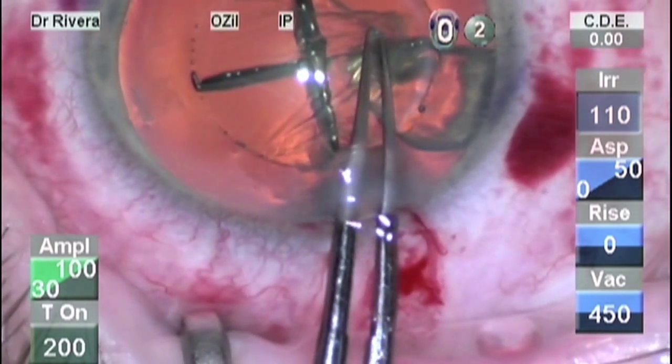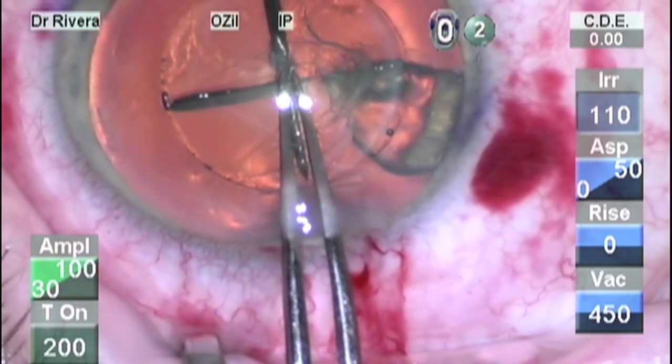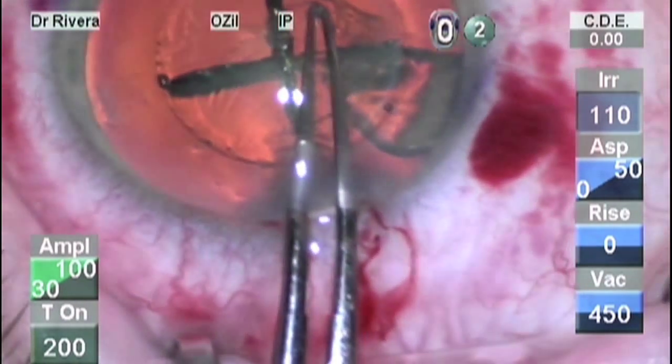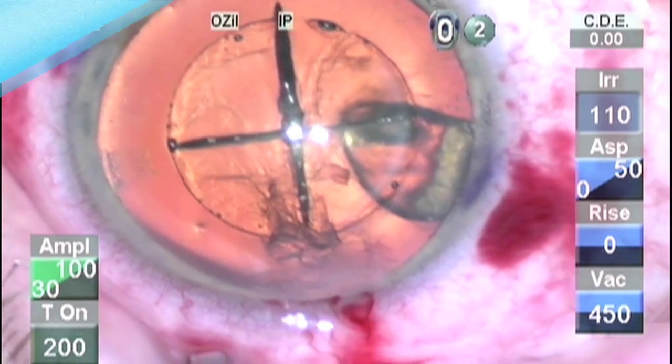In its earliest versions, we observed that the LensX often treated the anterior capsule inadequately and incompletely, creating something of a postage stamp effect that required careful manual completion and removal of the capsulotomy.